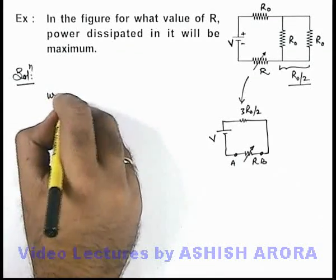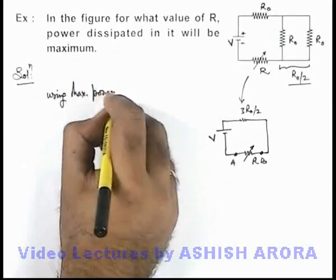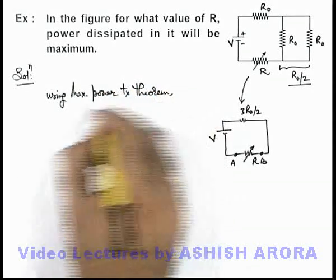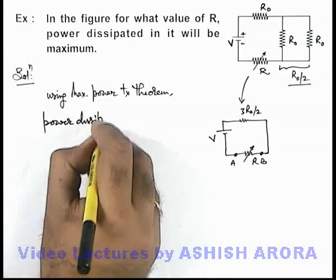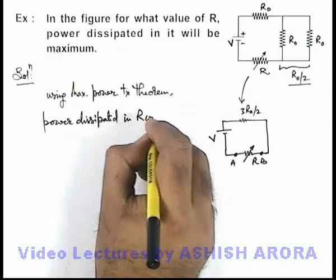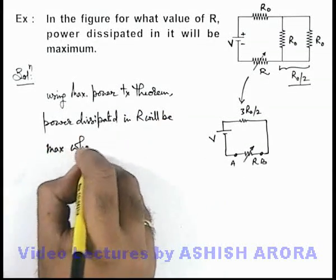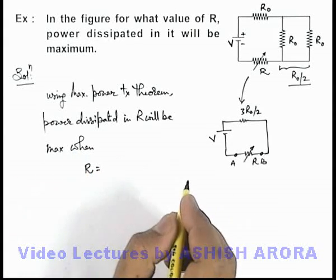So here we can directly write it using maximum power transfer theorem. Power dissipated in R will be maximum when the value of R is equal to the internal resistance of the source.